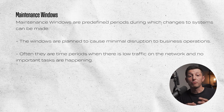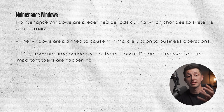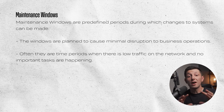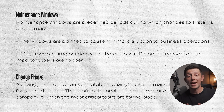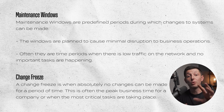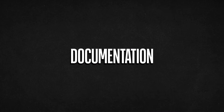Even after a change has been approved, there are still controls to follow — one of which is the maintenance window. Maintenance windows are predefined periods during which changes to systems can be made, planned to minimize disruption to business operations — often during low-traffic periods. For example, making a network change in the evening or over the weekend when most users are offline. A change freeze is when absolutely no changes can be made for a period of time, such as during peak business periods. Retailers like supermarkets often have change freezes during Christmas, as a simple update could take down checkout systems and cost millions per hour.